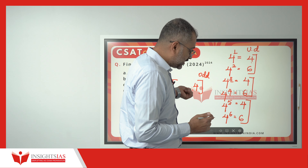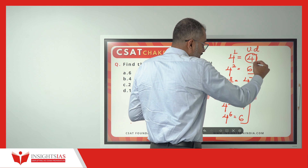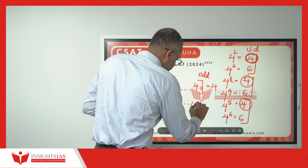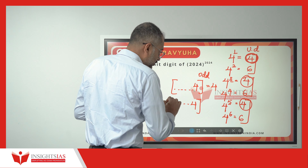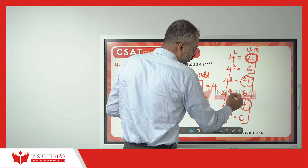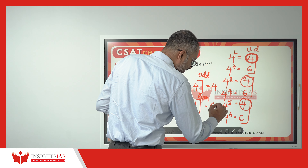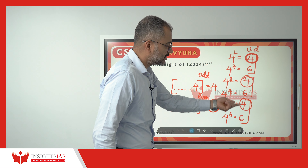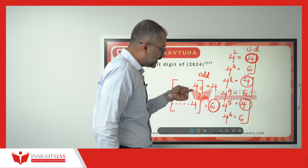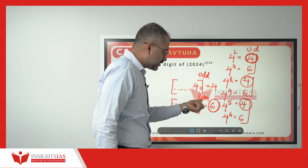When a number ends with 4 and the power is odd, the unit digit is always 4. Similarly, any number which has a unit digit of 4 raised to an even power — for example, 2, 4, 6, 8, 10, 100, 200, 2024 — the unit digit is 6. So for a number ending in 4: you get 4 when the power is odd, and 6 when the power is even.